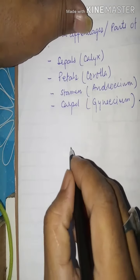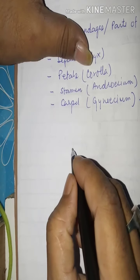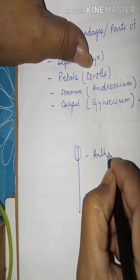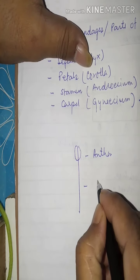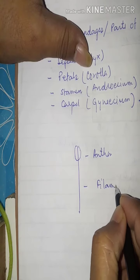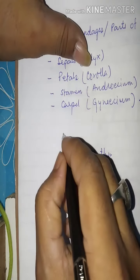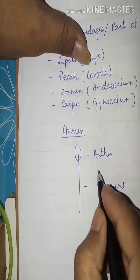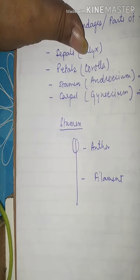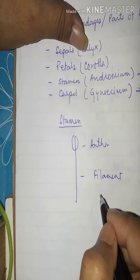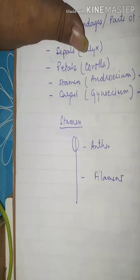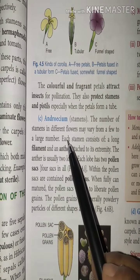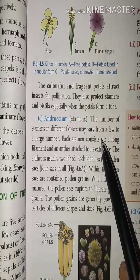Stamens are the main male part of a flower. Each stamen consists of an anther and a long stalk known as a filament. The androecium consists of all the stamens, and their number may vary from a few to a large number in different flowers.